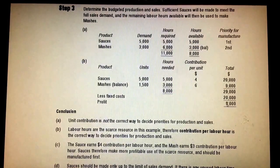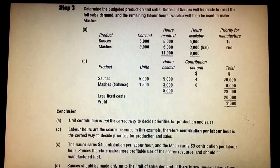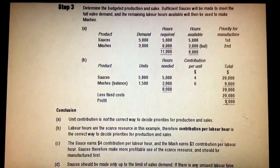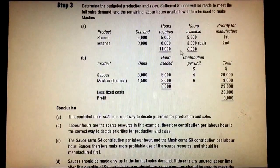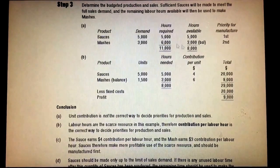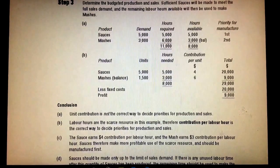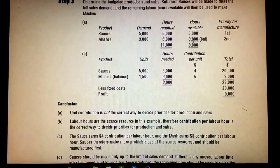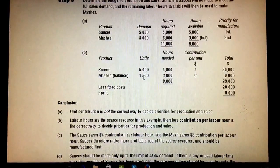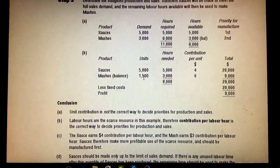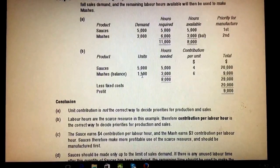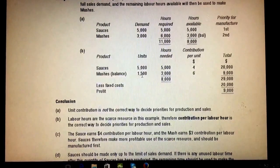In conclusion: produce the product first which has the highest contribution per limiting factor — in this case Sauce ranked first and Mash second. Invest all available hours in the highest-ranked product, then use whatever hours remain for the next product. That is the key idea about limiting factors. If you have any questions, drop a comment and I'll get back to you. Thanks for watching!